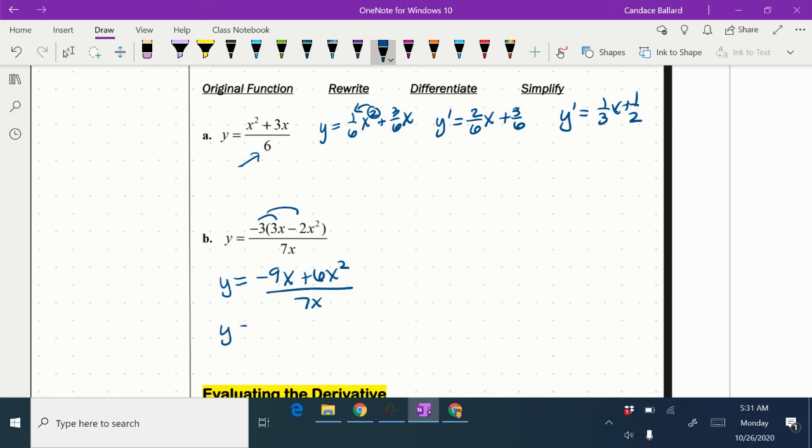Then I'm going to choose to split that into two fractions. So negative 9x over 7x. Those two fractions will have that same common denominator of 7x, so 6x squared over 7x. And again, before I take the derivative, I'm going to simplify a little bit more. I know these x's will cancel, and that x will go into this one.